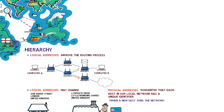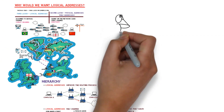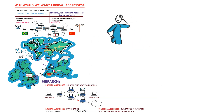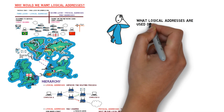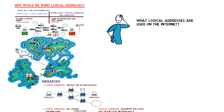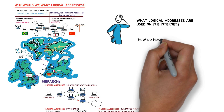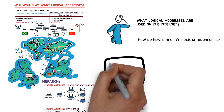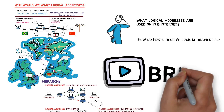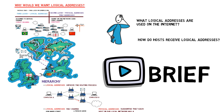In this video, I hope you were convinced that we need logical addresses in addition to physical addresses. Many questions still remain unanswered — for example, what logical addresses are used on the internet, and how do hosts receive these logical addresses? We'll answer these questions, as well as many others, in future videos as we start to describe the most commonly used network layer protocol on the internet: IP, and specifically IPv4. Feel free to leave comments or questions here or on our Facebook page.